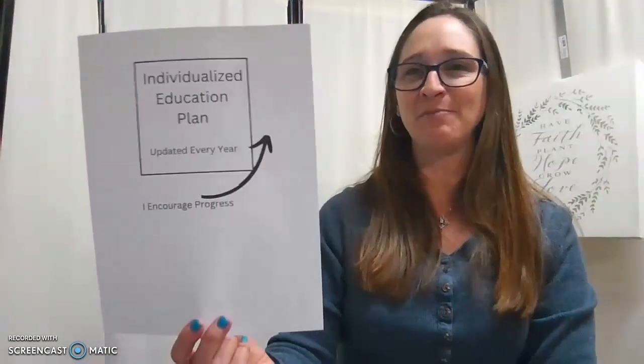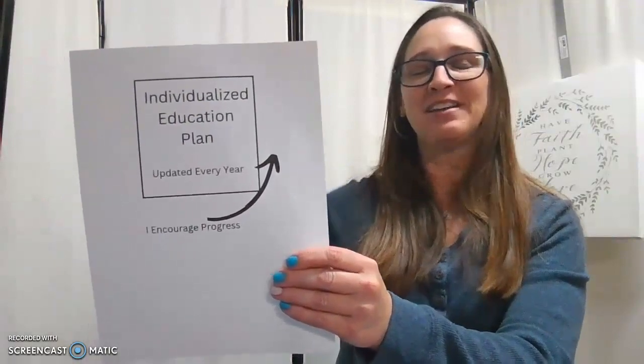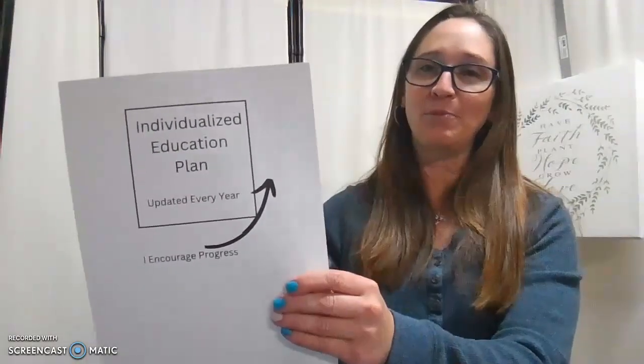In the next section, it's the IEP section, we do the same procedure. Current IEP goes in the pocket. All the old ones get stapled, hole punched, and put behind the tab.